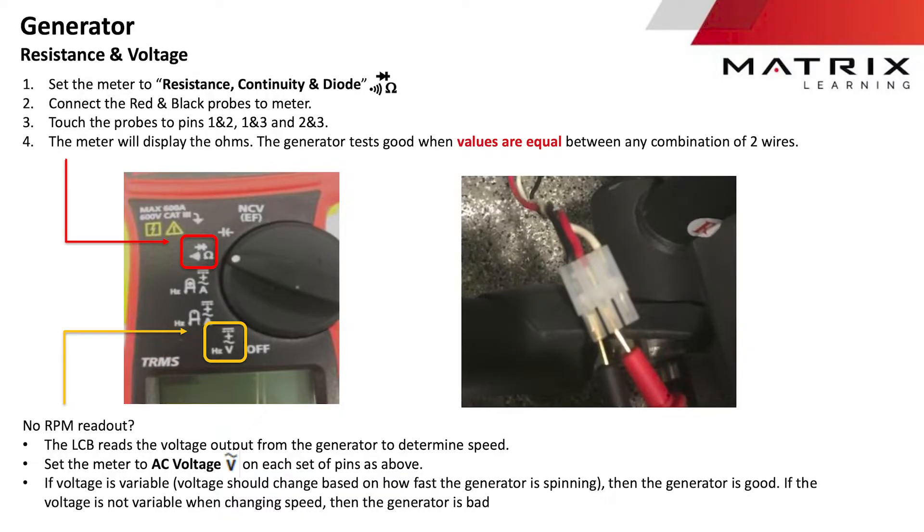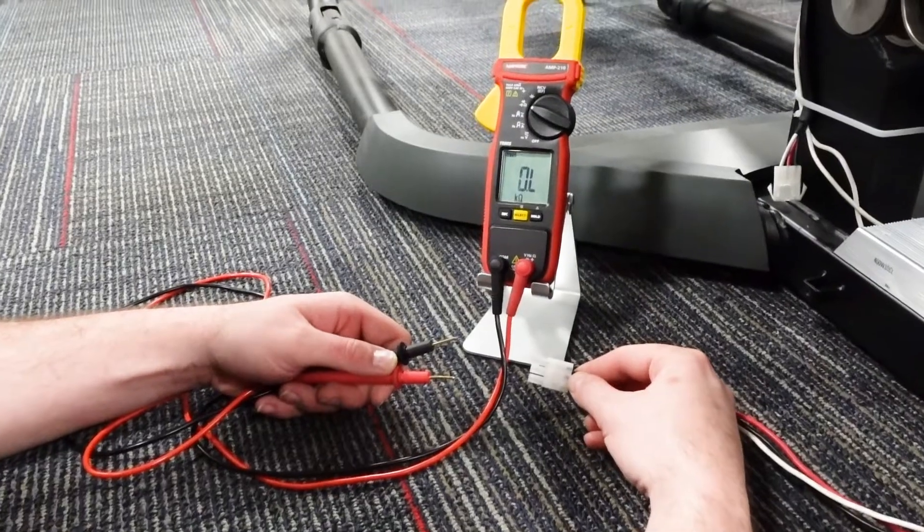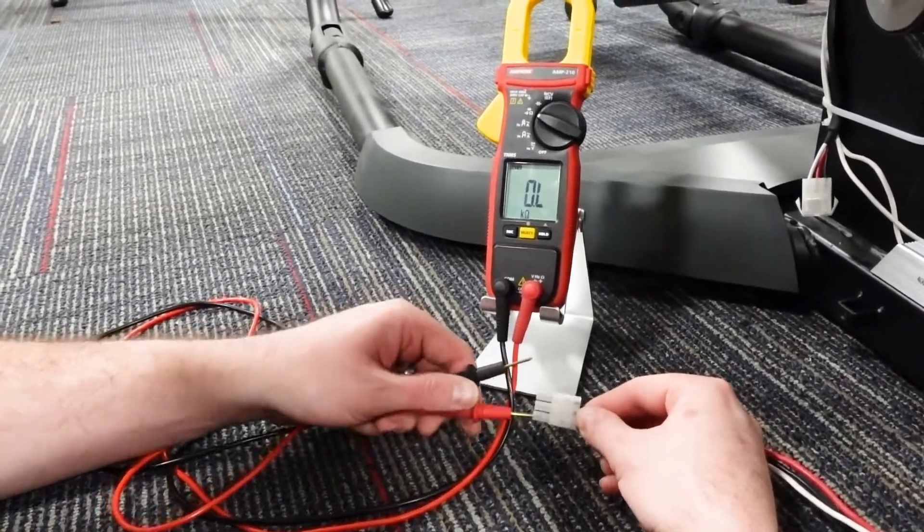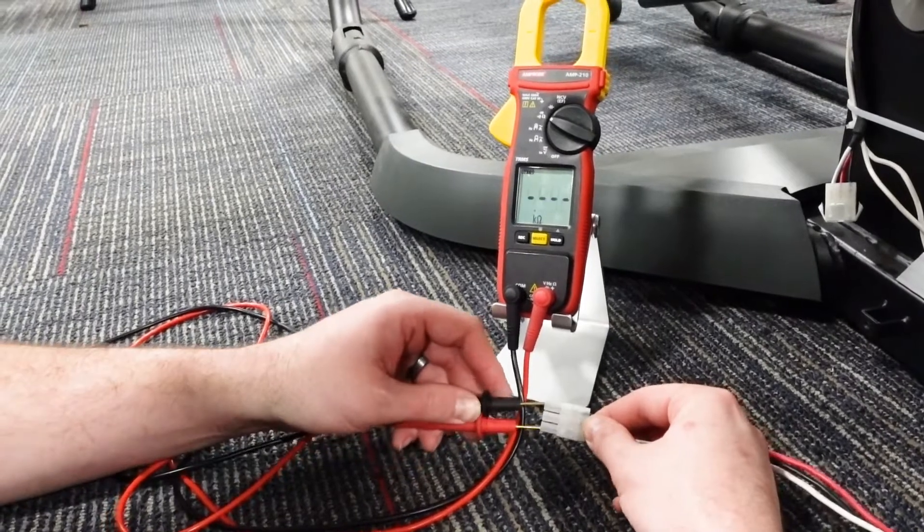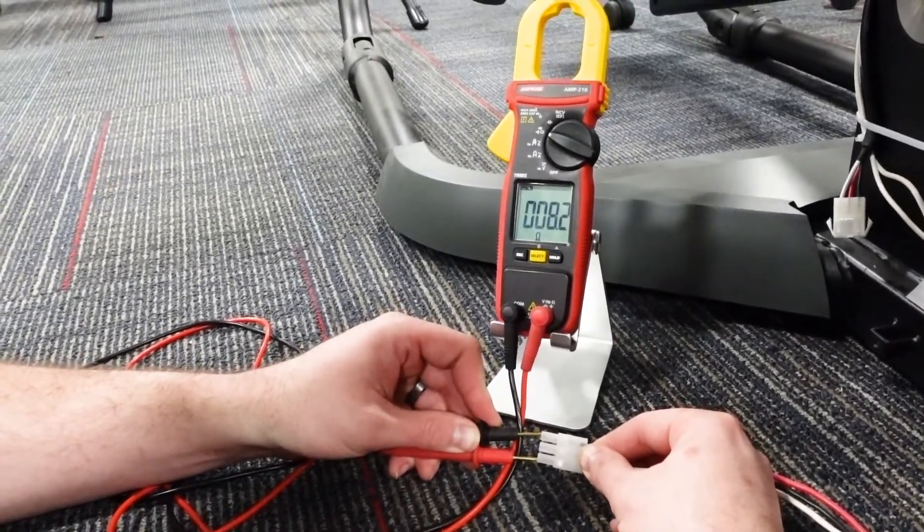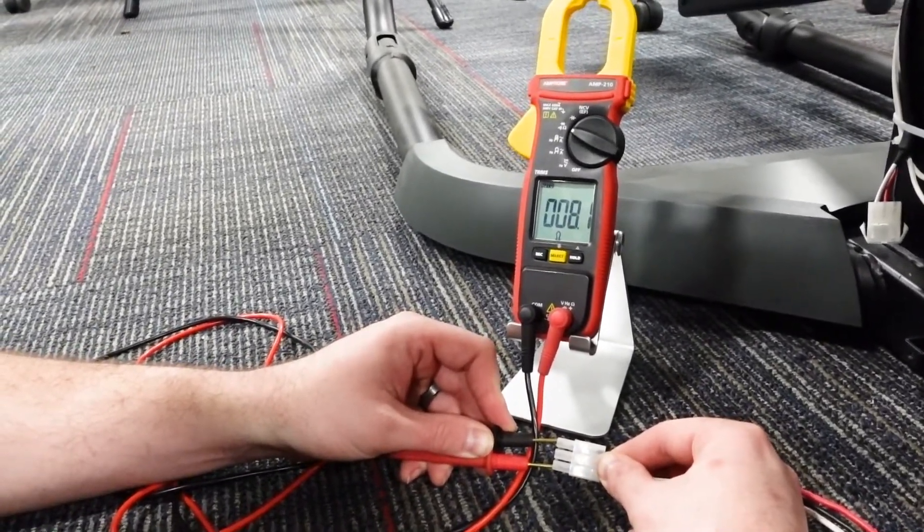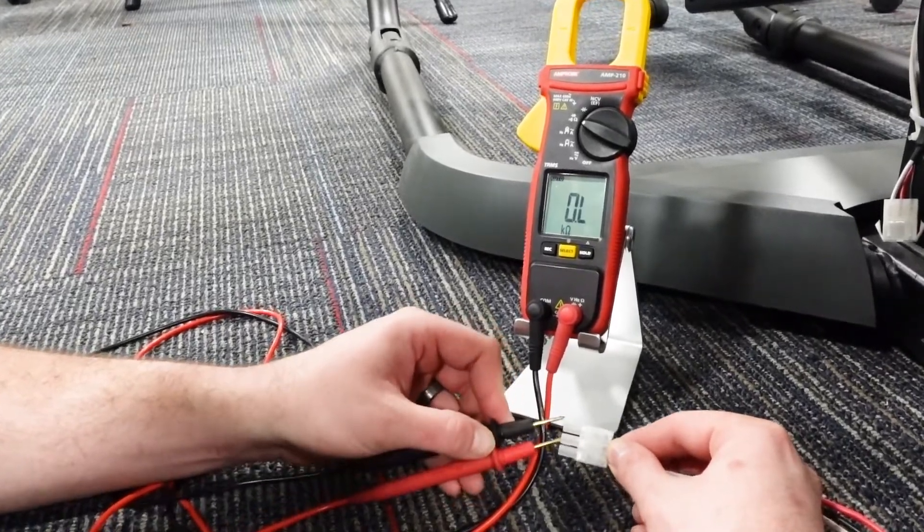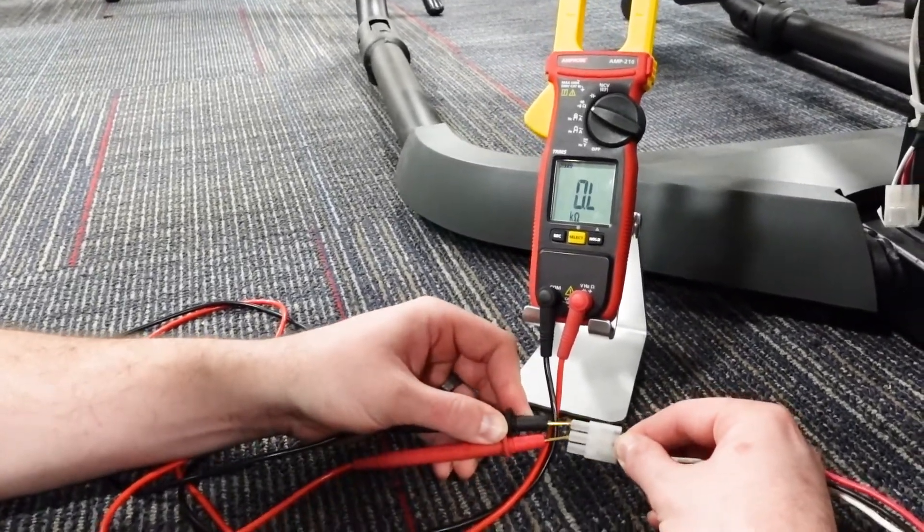Now, let's take a look at how we can test the generator. The generator you will find in Matrix equipment is usually a three-phase generator. Test resistance across pins 1 and 3, 2 and 3, and 1 and 2. The generator tests good when values are equal between any combination of two wires.